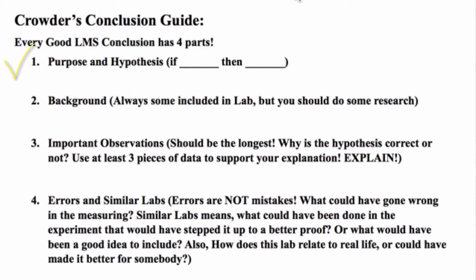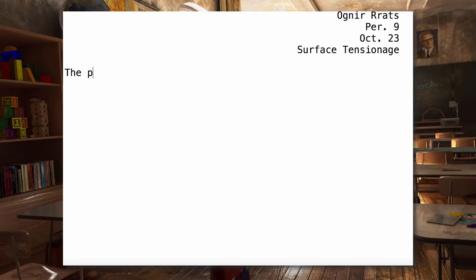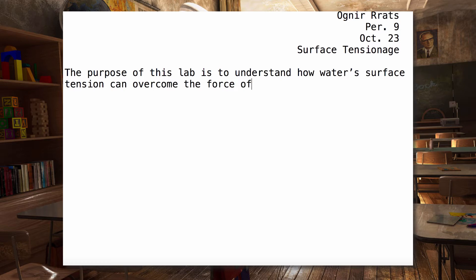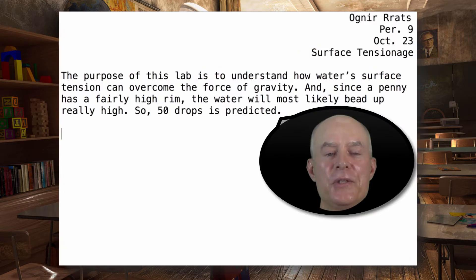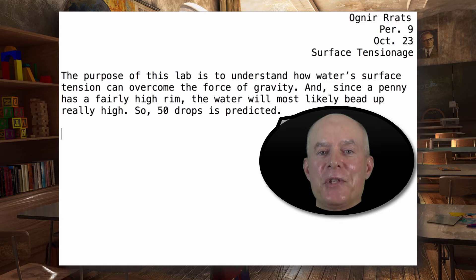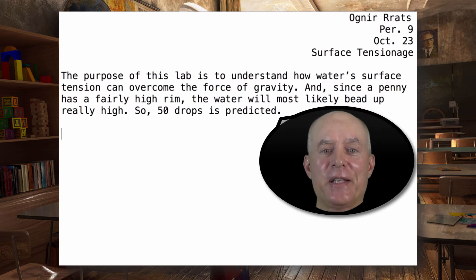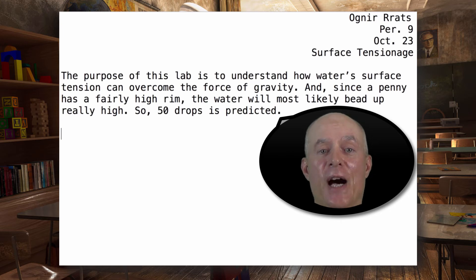First: the purpose and the hypothesis. For example, the purpose of this lab is to understand how water's surface tension can overcome the force of gravity. And since a penny has a fairly high rim, the water will most likely build up really high — so 50 drops is predicted. The hypothesis is an if-then statement. I said 'since,' which is like saying 'if,' and instead of saying 'then,' I said 'will most likely.' It's a prediction that you make.